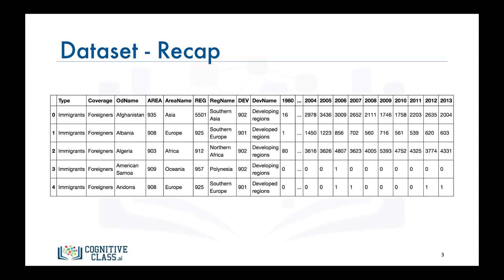Recall that each row represents a country and contains metadata about the country such as where it is located geographically and whether it is developing or developed. Each row also contains numerical figures of annual immigration from that country to Canada from 1980 to 2013.